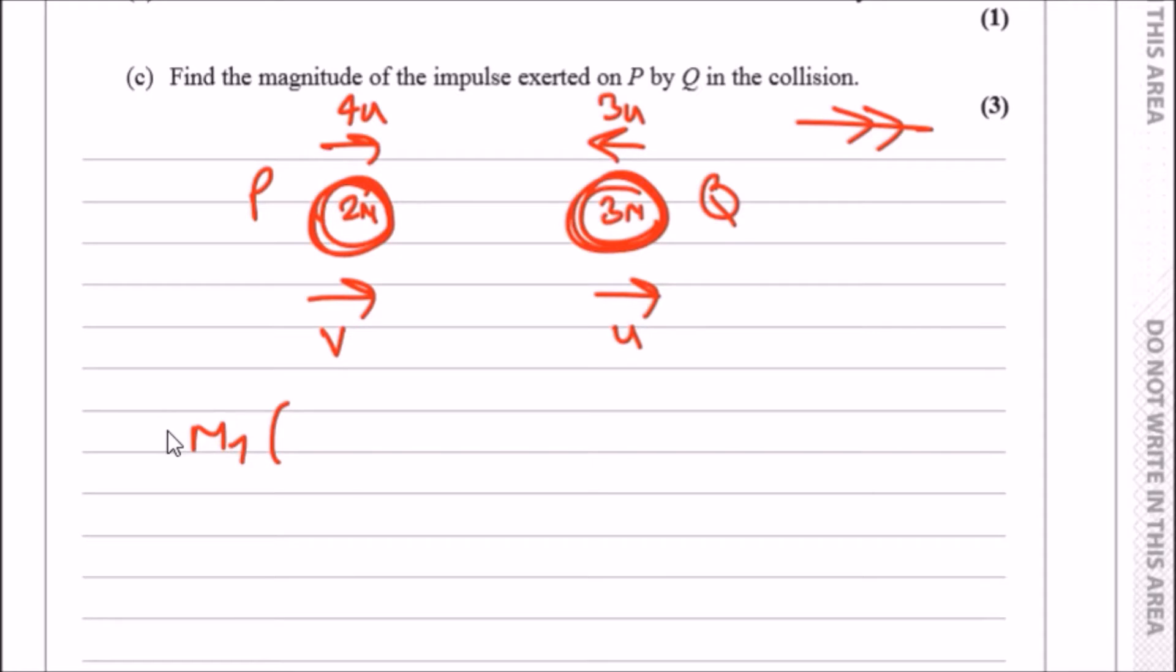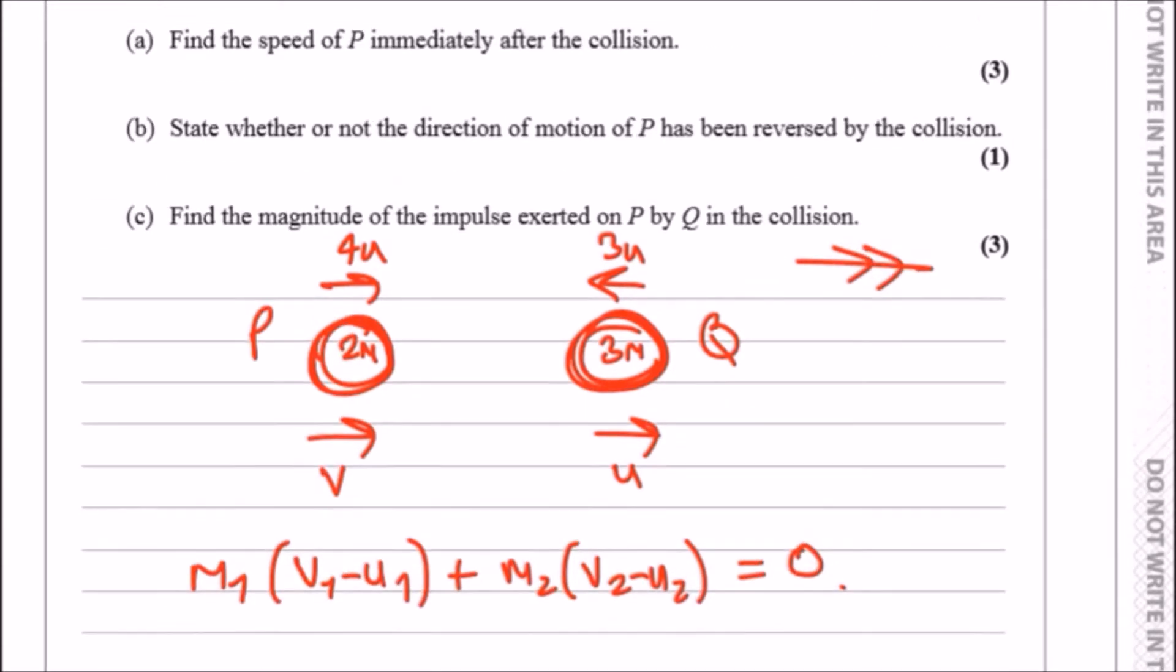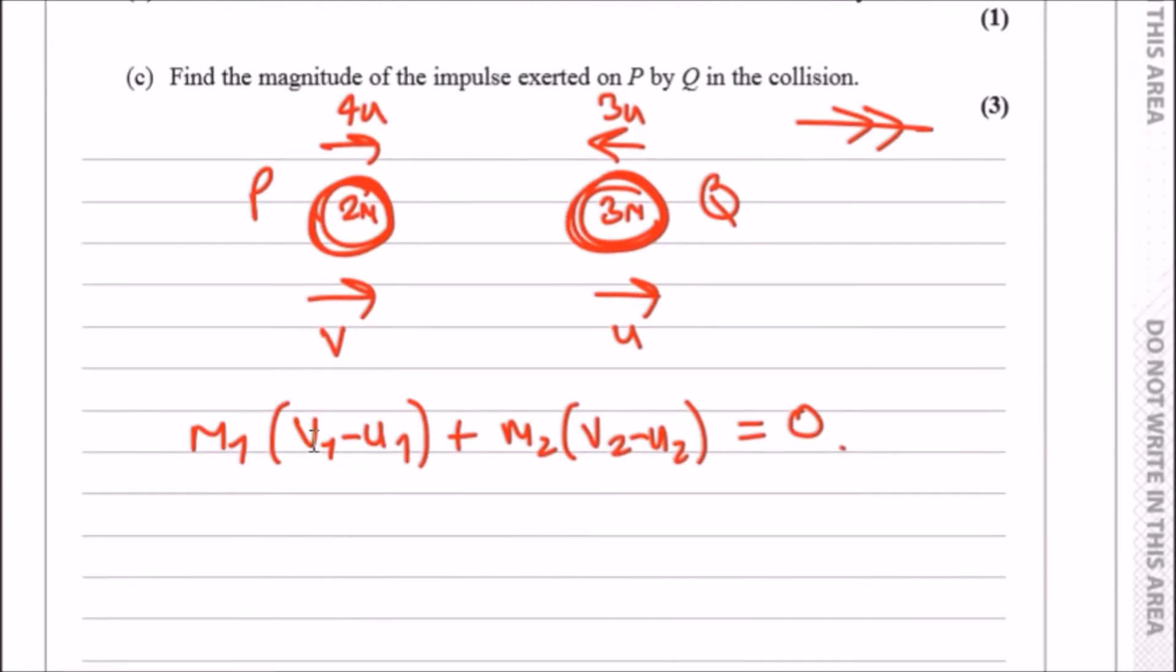We can use this unique formula I use: the first mass times the impulse, so basically this is just the impulse equation, would be v1 minus u1 plus the sum of the other mass times the difference in speed v2 minus u2 must total zero.